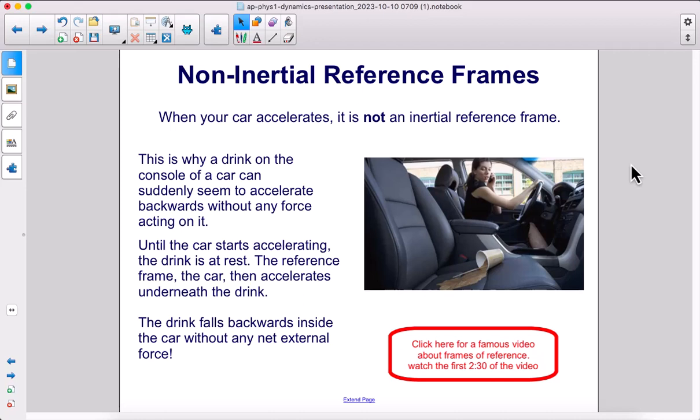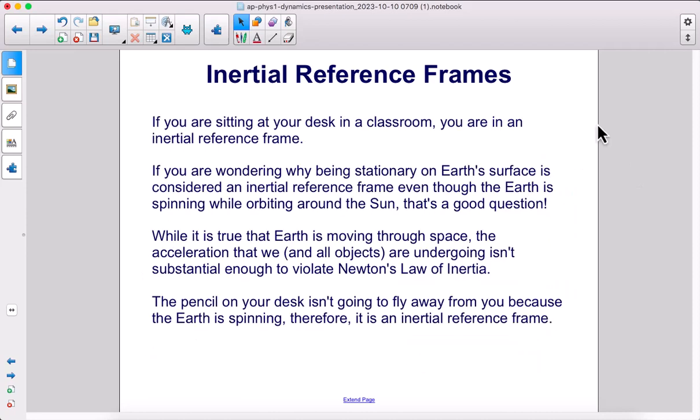If you are sitting at your desk in a classroom, you are in an inertial reference frame. If you're wondering why being stationary on Earth's surface is considered an inertial reference frame even though the Earth is spinning while orbiting around the Sun, that's a good question. While it is true that Earth is moving through space, the acceleration that we and all objects are undergoing isn't substantial enough to violate Newton's law of inertia. The pencil on your desk isn't going to fly away from you because the Earth is spinning. Therefore, it is an inertial reference frame.